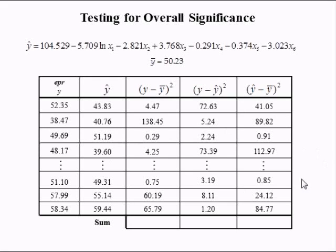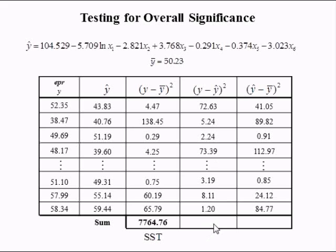The rest of them are shown in the table. When we sum this column, we get the total sum of squares — this is the numerator of the variance in y. When we sum this column, each one of these is a squared estimated error, so this sum is the sum of squared estimated errors, SSE. The total of this column is the SSR.